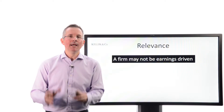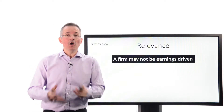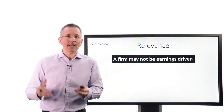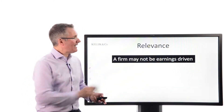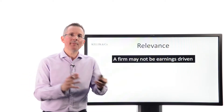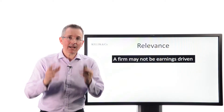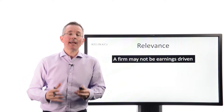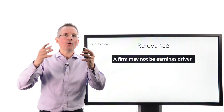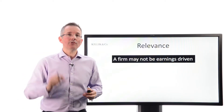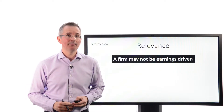Next problem: relevance. A firm may simply not be earnings-driven. In certain sectors, other metrics are more relevant. First of all, some firms don't earn anything — if a firm is loss-making, calculating a PE ratio is almost impossible. But even assuming it's profit-making, is profit the main driver? In the investment trust sector or the property investment sector, assets may be a more relevant driver. In some sectors, sales may be more relevant. So sometimes you need other ratios — price to book or price to sales. You can't just apply the PE ratio across every sector and expect a meaningful comparison.